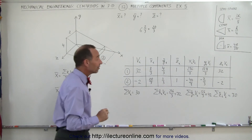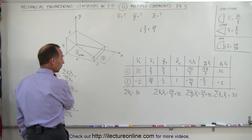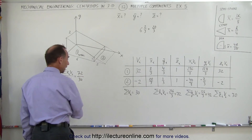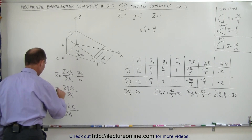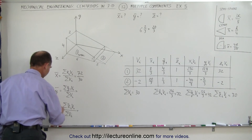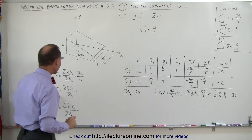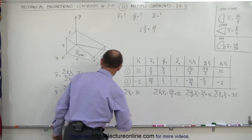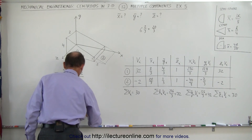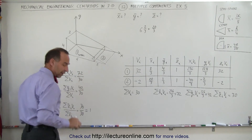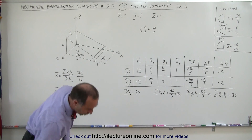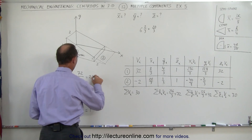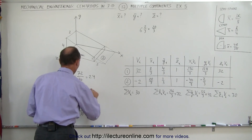We're now ready to find the x, y, and z coordinates of the centroid. For the x-coordinate, we take seventy-two and divide it by thirty. I notice I had written x twice — this must be the y-coordinate and this must be the z-coordinate. For the y-direction, we divide forty-two by thirty. And for the z-direction, we divide thirty by thirty — that's an easy division, that's equal to one. Seventy-two divided by thirty is indeed two-point-four. And forty-two divided by thirty is equal to one-point-four.